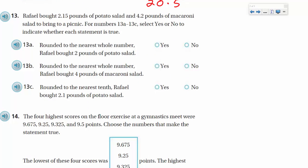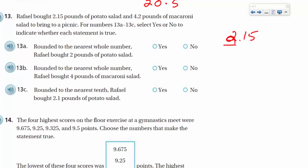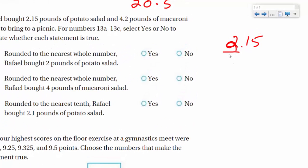It says, Rafael bought 2.15 pounds of potato salad and 4.2 pounds of macaroni salad to bring to a picnic. All right, for numbers 13a through 13c, select yes or no to indicate whether each statement is true. Well, if we were to round it to the nearest whole number, Rafael bought 2 pounds of potato salad. Well, if we were going to round 2.15 to the nearest whole number, when we round numbers to the nearest whole number, that's the ones place. So, we kind of underline the number that we're looking to round. I always like to kind of draw an arrow, for teaching purposes, of course, to run that arrow to the digit to the right of that number you're going to round.